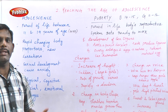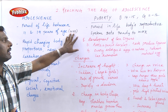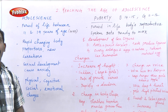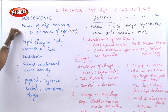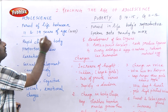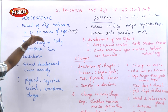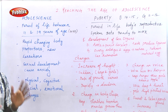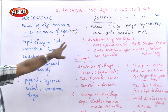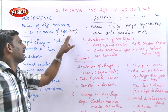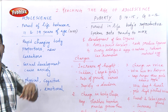Starting with adolescence — what age period can we call adolescence? The World Health Organization gives a definition: adolescence is a period of life between 11 and 19 years of age. So the adolescence period spans from age 11 to 19, as defined by the World Health Organization.